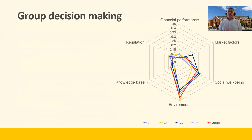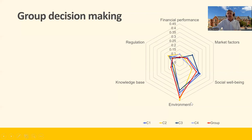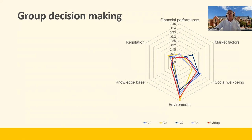We showed this graph in an earlier video — how we did it in our situation where each individual ranked each domain. The red line here is the average of their outcomes. We can see this group were very closely aligned in terms of the high weighting placed on environment and social wellbeing, which is what the trustees were particularly concerned about. There doesn't seem to be much disagreement in this group about what's important for the land they're jointly managing as trustees.